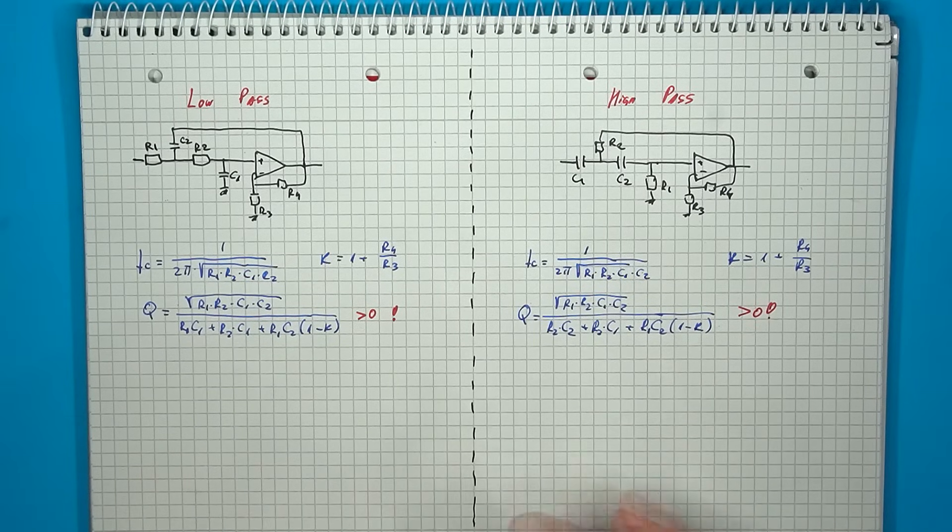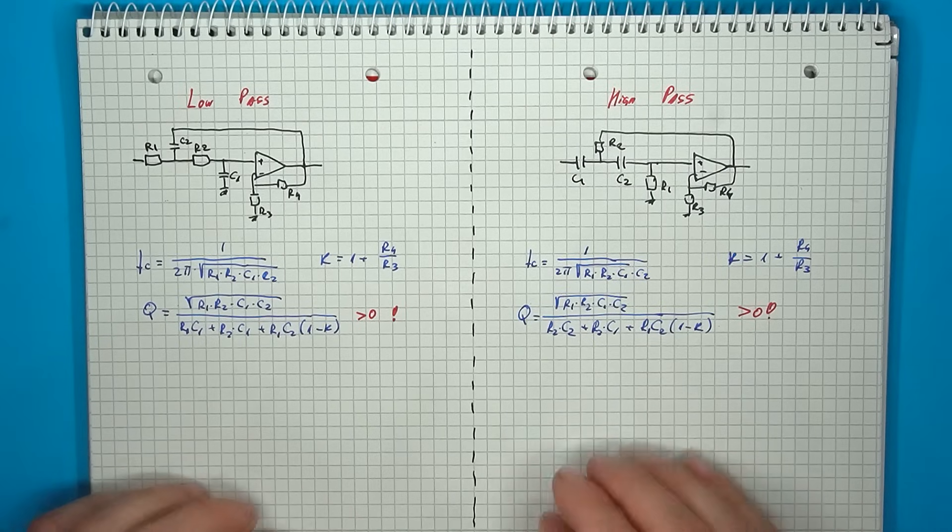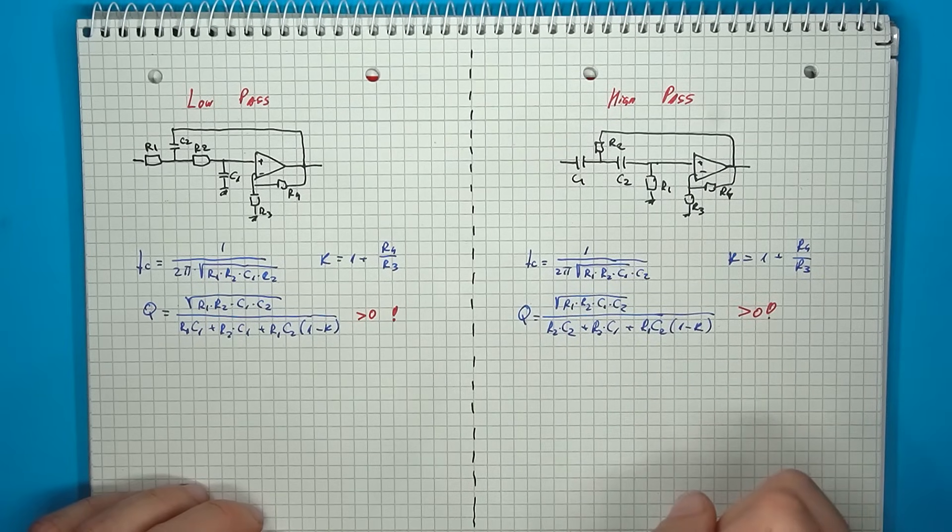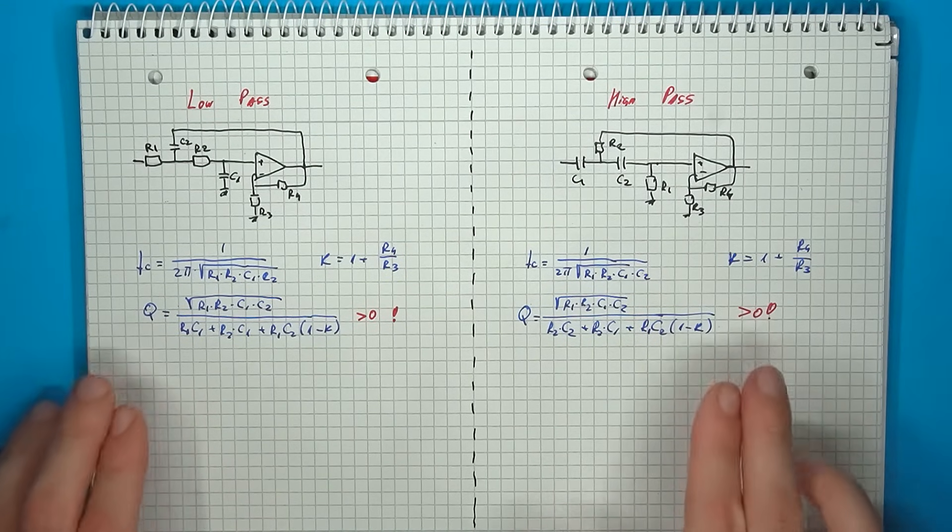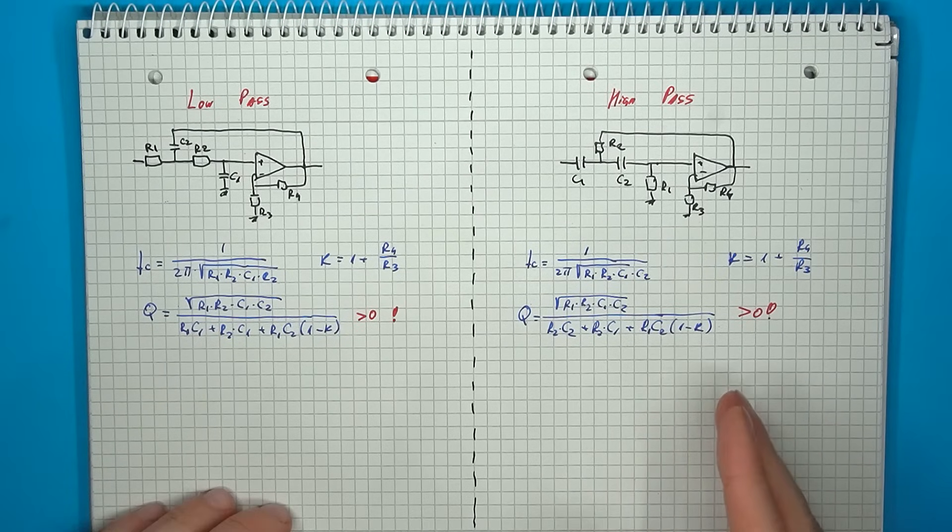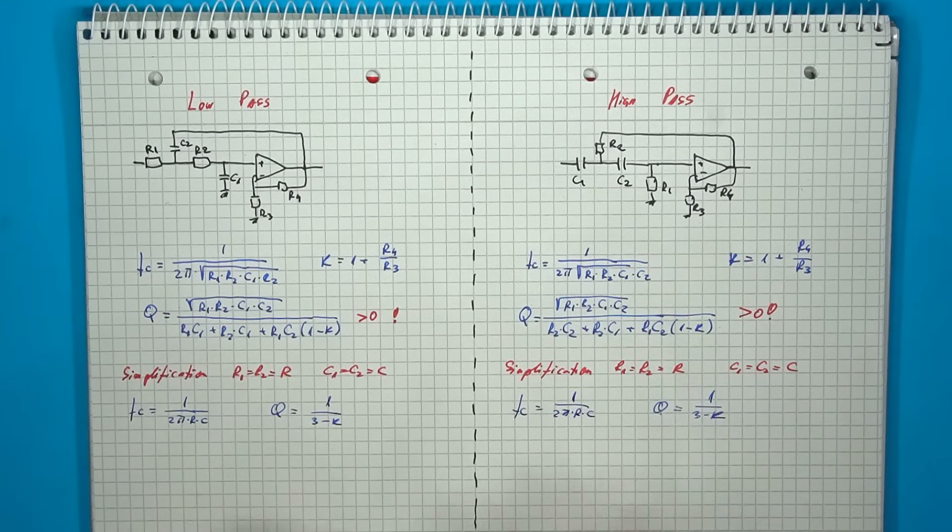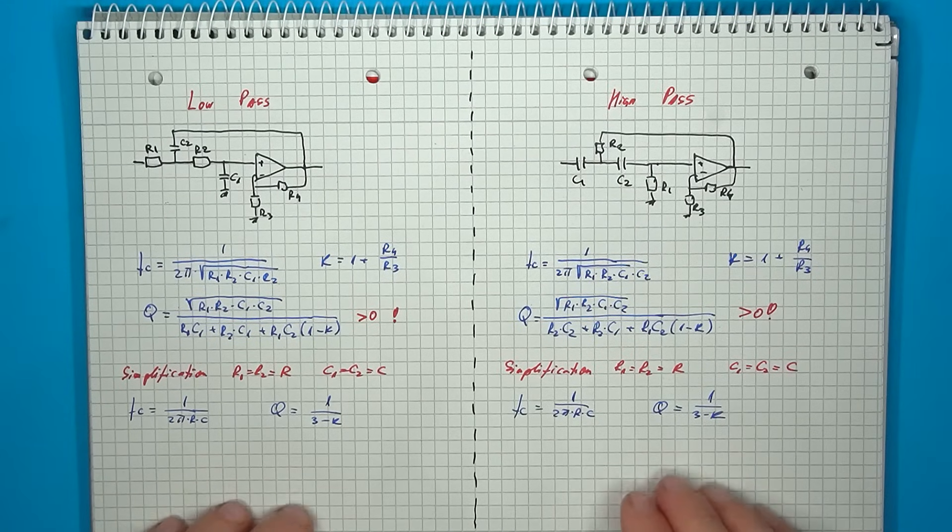First, we can have a look at the second-order high-pass and low-pass filters. I was able to find some formulas that describe their behavior, so based on the resistors and capacitors in the RC network, you can set the corner frequency, and based on these components and the gain of the amplifier, you can also set the Q factor. It's important, however, to check that this value stays a positive number. Usually, if the gain is too high, the Q factor will turn negative, and you don't want that. Now, to make life easy, a common simplification that is done is to consider the capacitors and the resistors to be of equal value, which will make the formulas much simpler, and the Q factor can be adjusted only from the gain.